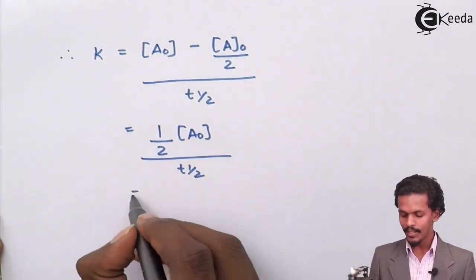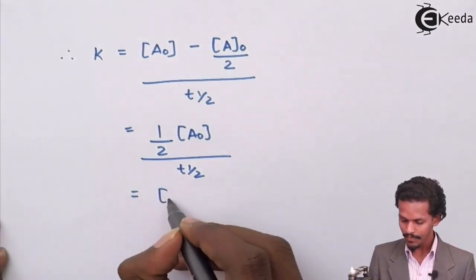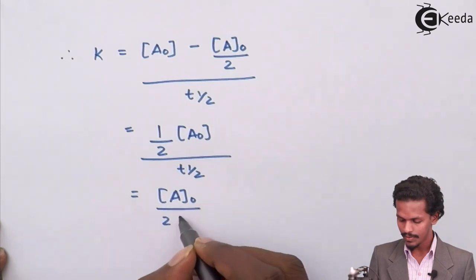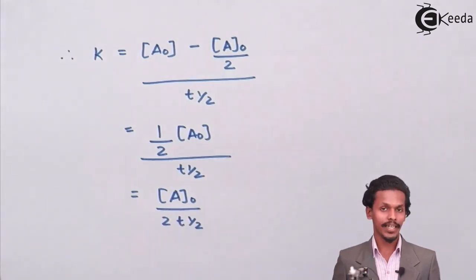So therefore this whole equation can be represented as K equals A0 divided by 2 times T half.